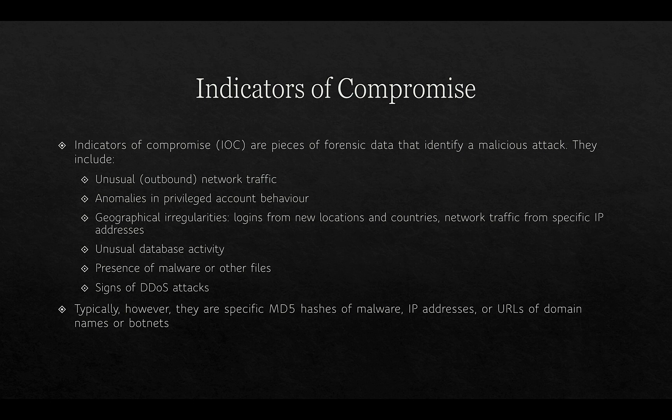Anomalies in privileged account behavior is another indicator of compromise. Geographic irregularities — logins from new locations and countries — network traffic from specific IP addresses, unusual database activity, presence of malware or other files, and signs of DDoS attacks. Things like ransomware are pretty obvious once your files have been encrypted and locked, and even DDoS attacks where you're getting unusually high request volumes coming in and everything slowing down.